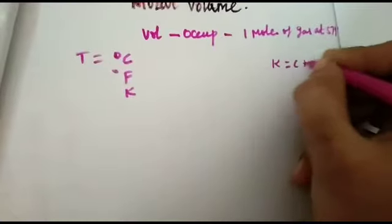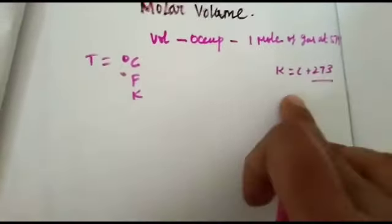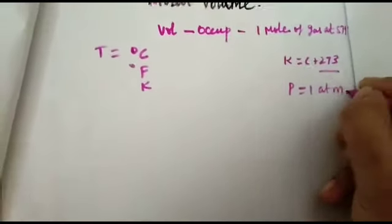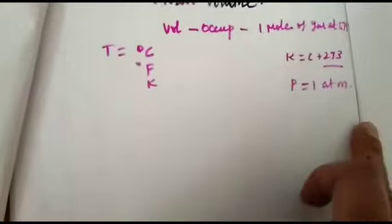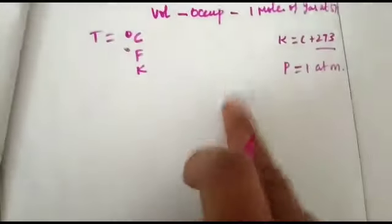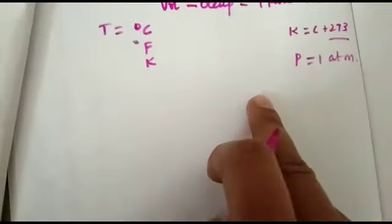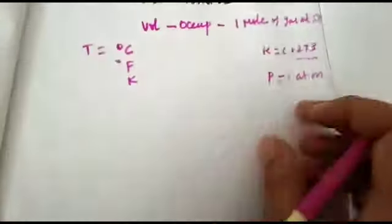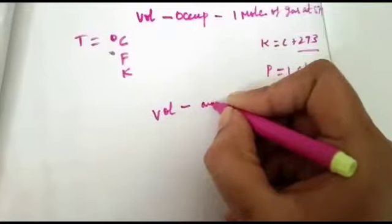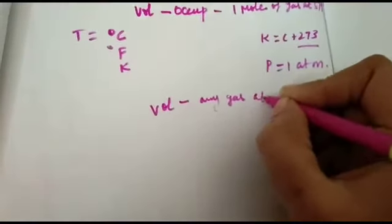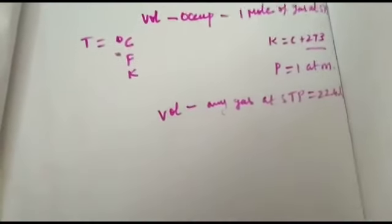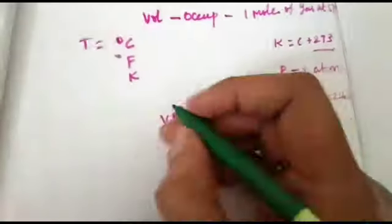Kelvin equals Celsius plus 273. Pressure is 1 atmospheric pressure. Any gas occupies 22.4 liters. The volume of any gas at STP is 22.4 liters, that is the concept. Volume of any gas at STP is 22.4 liters, that is called the molar volume.